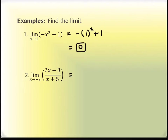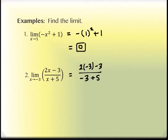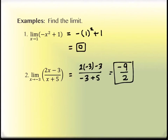The second one, we're going to plug in negative three. So we have two times negative three minus three, over negative three plus five. If we simplify this one, we end up getting negative nine over two for our limit as x approaches negative three.